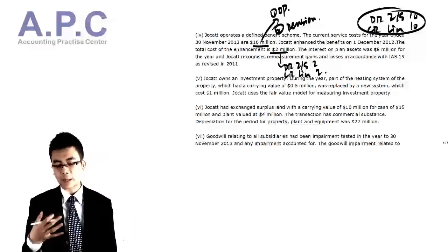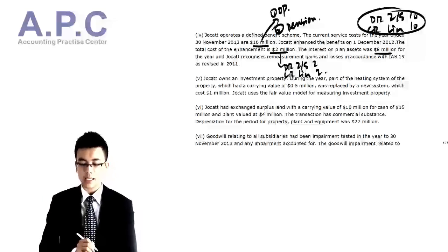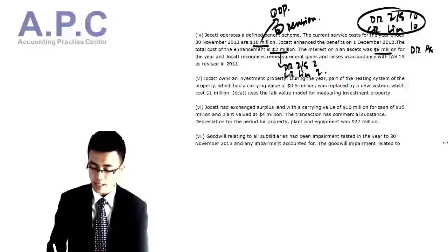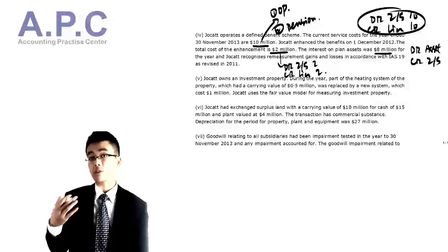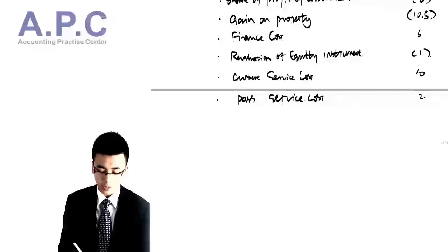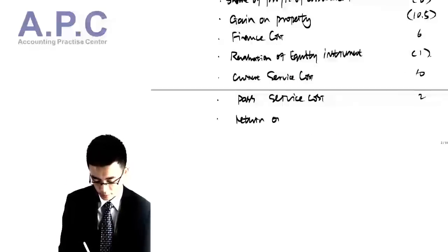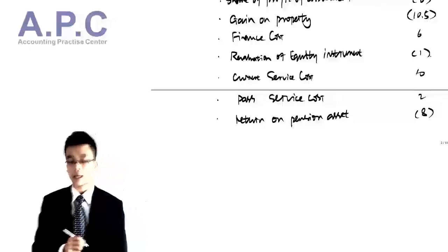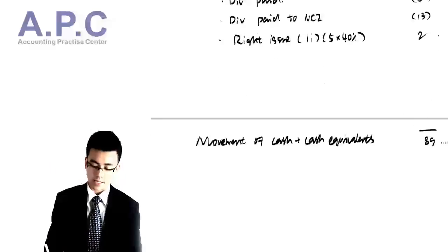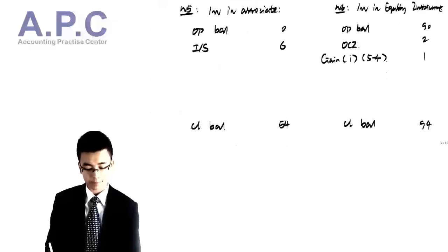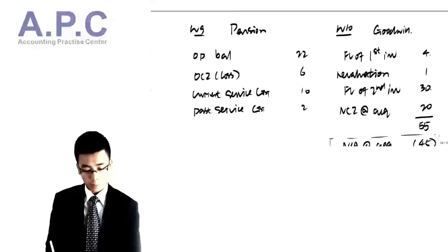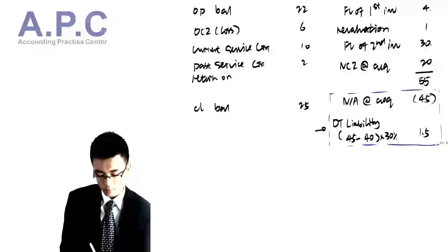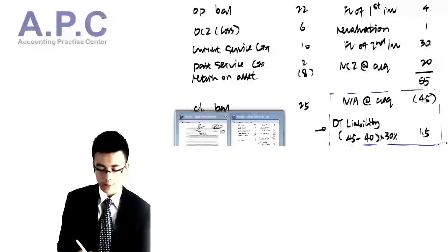The expected return on plan assets is 8 million. We debit the plan asset and credit the income statement — this has nothing to do with cash, so we include it in the non-cash item adjustment. Return on pension asset: minus 8, because it has been included as a positive figure in the statement of comprehensive income. In the pension working, the return on plan assets reduces the liability by 8.